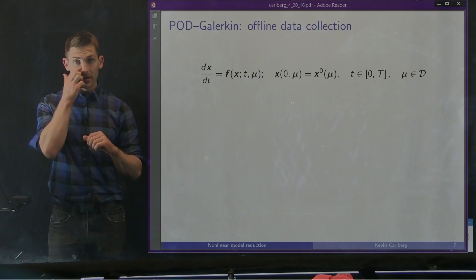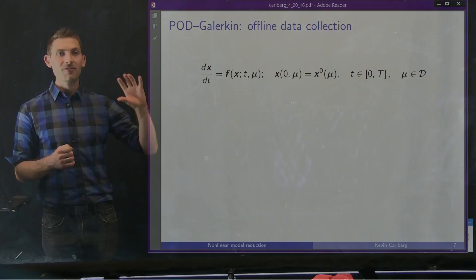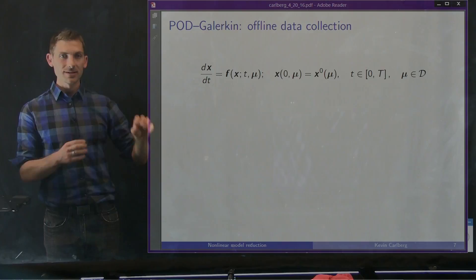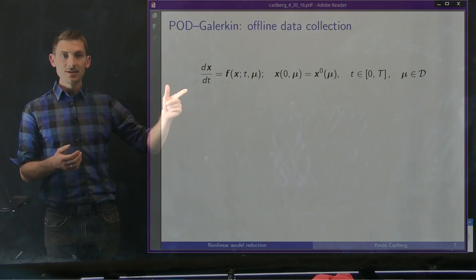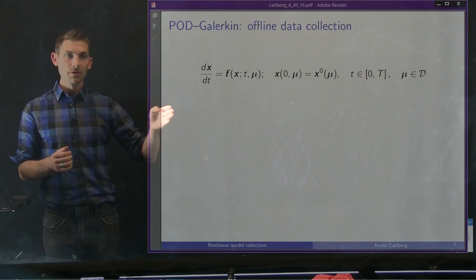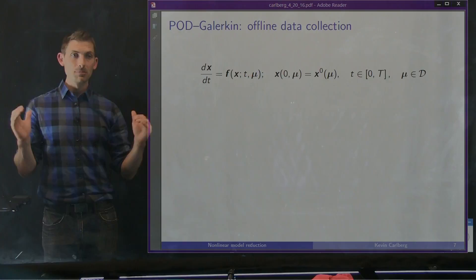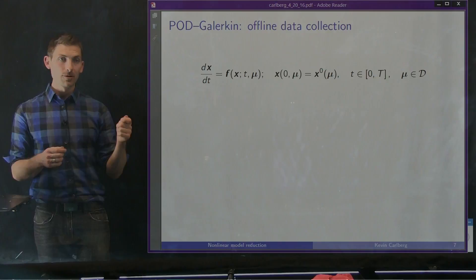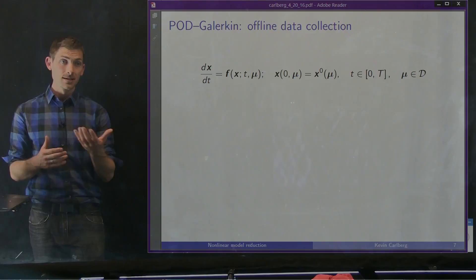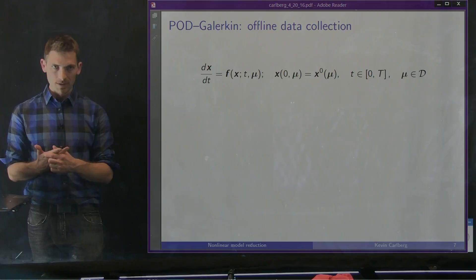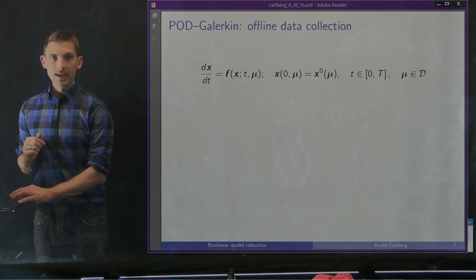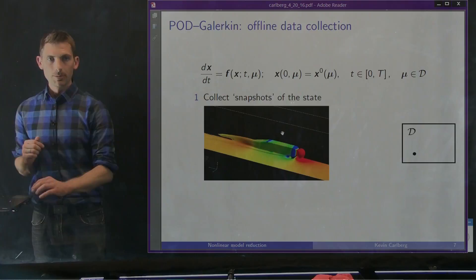So what is POD Galerkin? Our full order model is a system of nonlinear ordinary differential equations where F is a nonlinear vector, X is a state vector of dimension — let's say 10 million — T denotes time and μ denotes the parameters. We have some initial state x₀, some time interval 0 to T to simulate, and a parameterized variant where different parameter instances μ define different setups — in the cavity flow problem, μ corresponds to Mach number, angle of attack, and geometric parameters. POD Galerkin starts by collecting snapshots of the state.